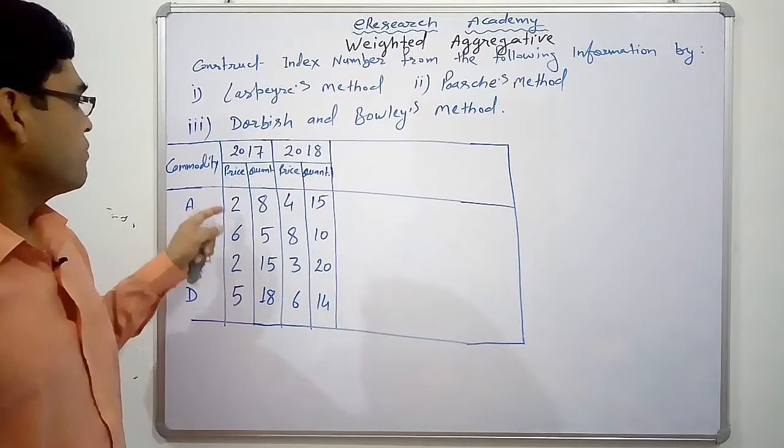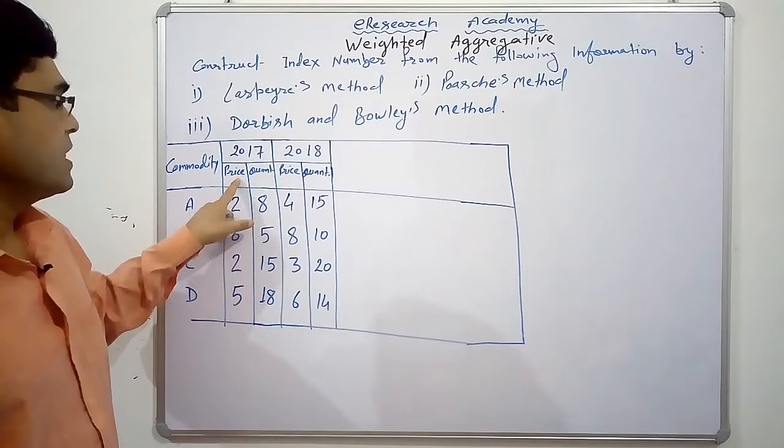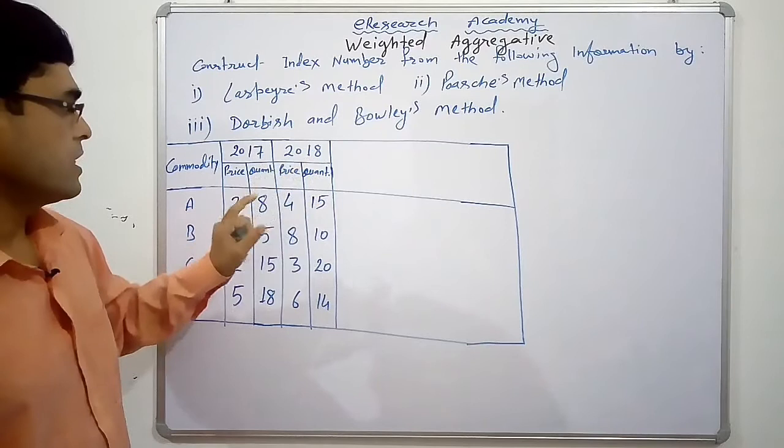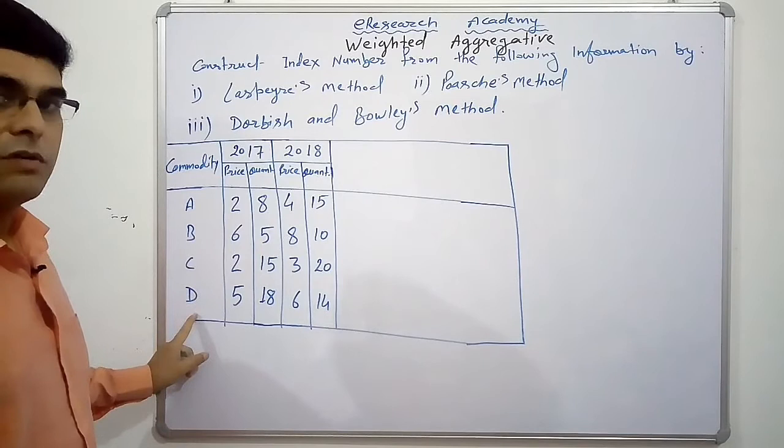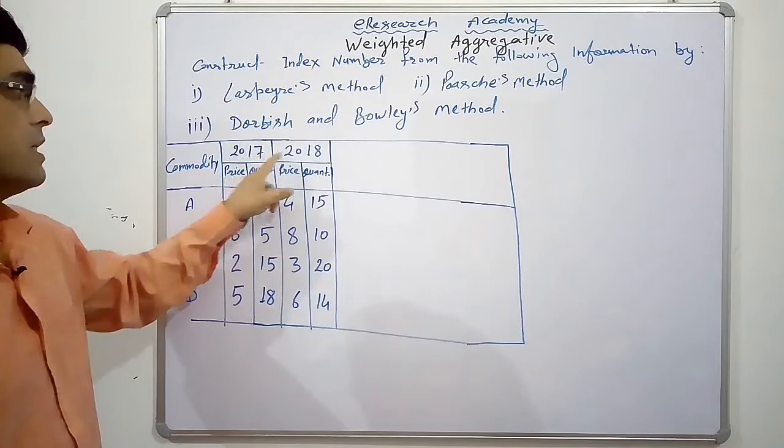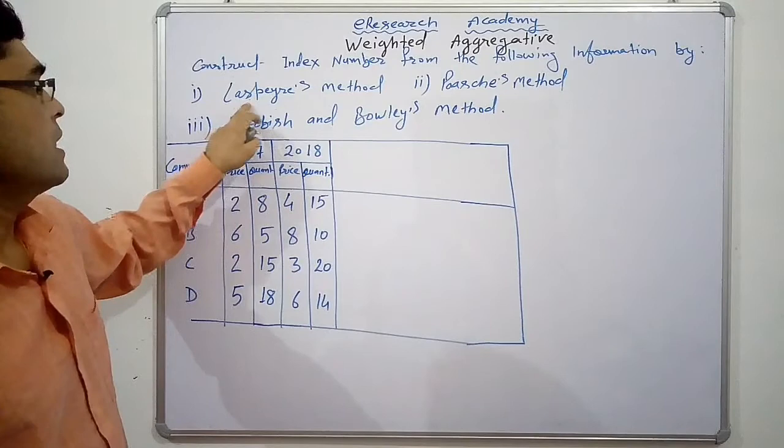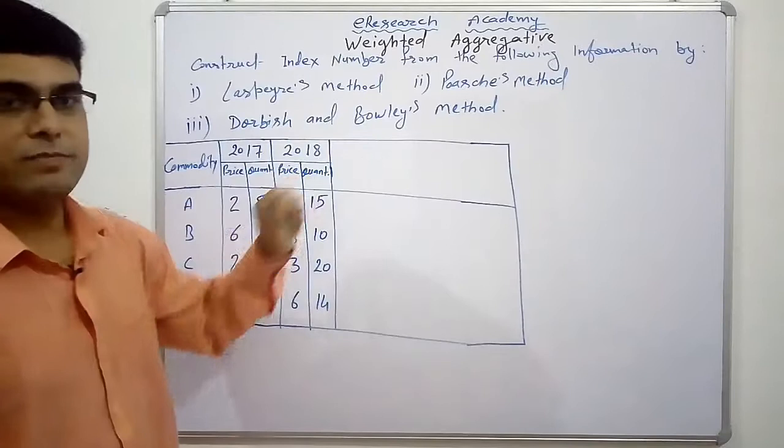We have given the information here as commodity, their prices in 2017 with the quantity and the same for 2018 prices and quantity. Commodities we have 1, 2, 3, 4 with A, B, C, D. Four commodities we have with their price and quantity demanded in 2017 and 2018. Now we have to construct the index number by first Laspier's method, second Passage method and third is Dorbys and Powys method. So let's start.